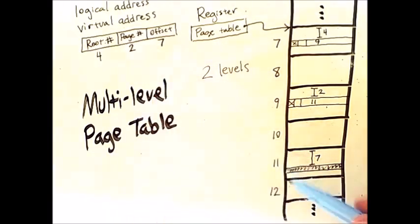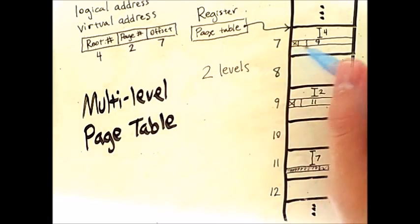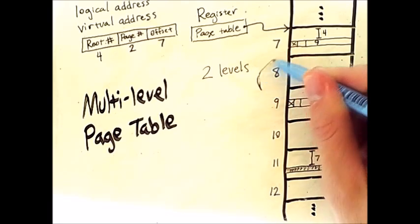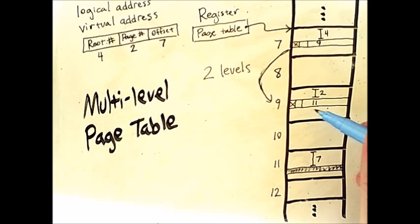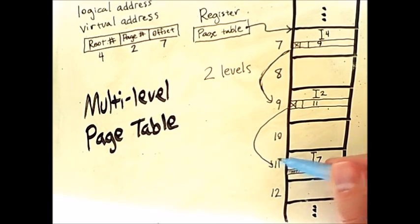And my offset within that page is seven, which gets me to the memory address that I'm actually looking for, either a line of code I want to execute or some data I want to retrieve. So this process involved going to a root page table, using it to look up another sub-page table, and using that page table to look up an actual page of the process.